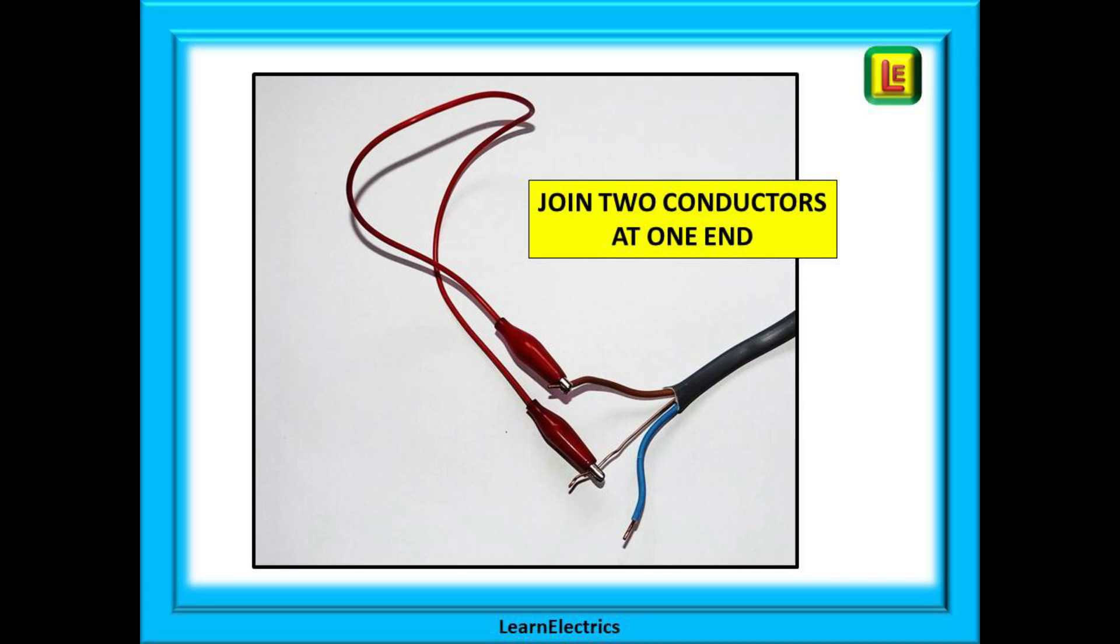How do we do this then? First step at one end strip back the brown conductor and join it to the earth conductor. I use crocodile clips, some people use terminal strips, others use WAGO connectors. Whatever you do just join the two cables together.